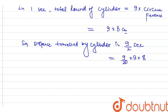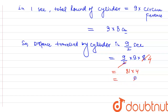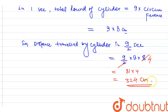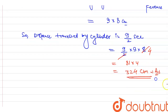From here, 2 will cancel with 8 to give 4. And 9 nines are 81. So it is 81 into 4. That gives us 324 centimeter. So the distance traveled by the cylinder in 4 and half seconds is 324 centimeter. That is our answer. Thank you, guys.